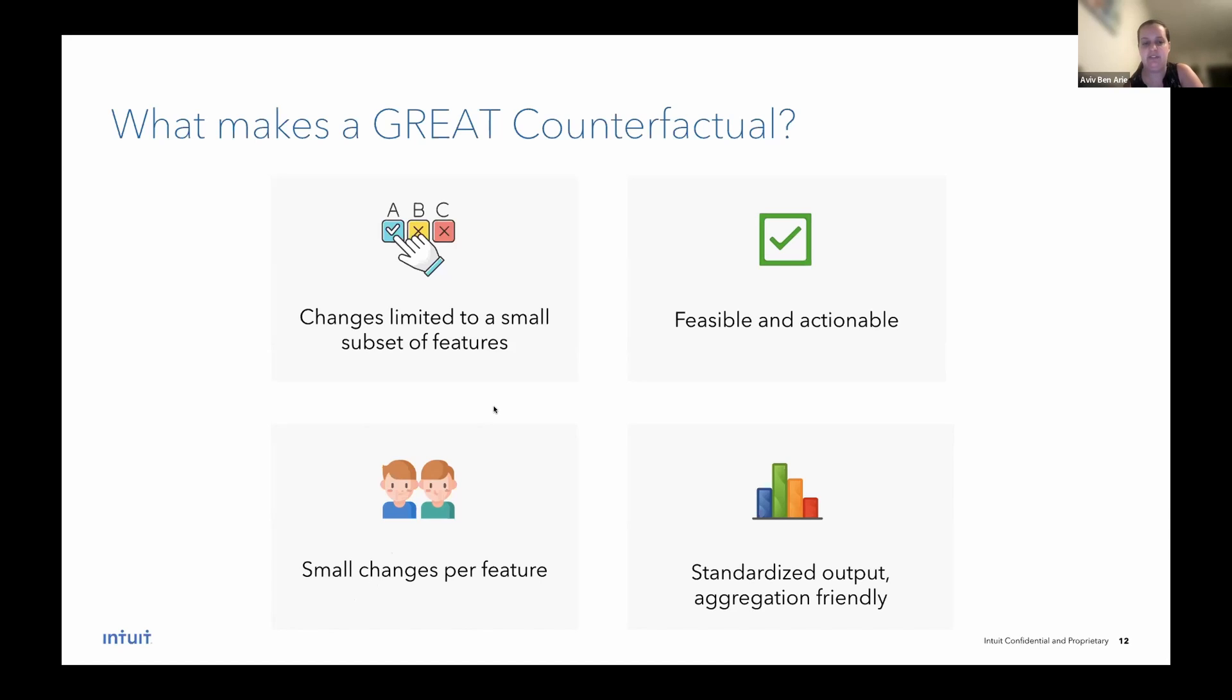It's not enough to have small changes or close counterfactuals. We also need them to be feasible and actionable, meaning we can't offer a change which means that age decreases. And as data scientists, we would also like that counterfactual output to be standardized and we'd like to be able to aggregate over counterfactuals because a counterfactual for a single instance is a great local explanation. But if we would like to globally understand how our model works, we would like to generate multiple counterfactuals for multiple instances and be able to aggregate over them all.